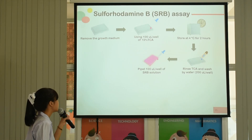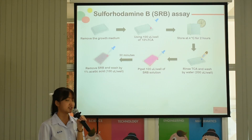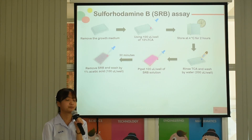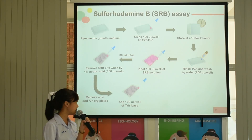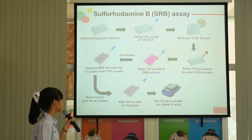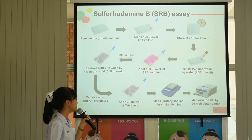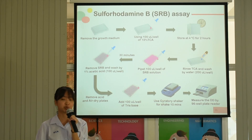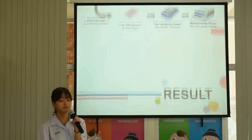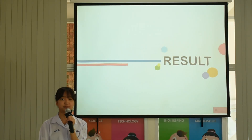Stain with SRB solution and wash with acetic acid. Then air dry and add Tris base. Shake it and read absorbance in a 96-well plate reader.